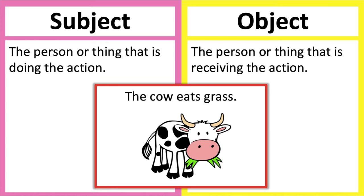Let's look at two examples. The cow eats grass. In this example, the subject is the cow because it's doing the action of eating. The object is the grass because it's being acted upon.